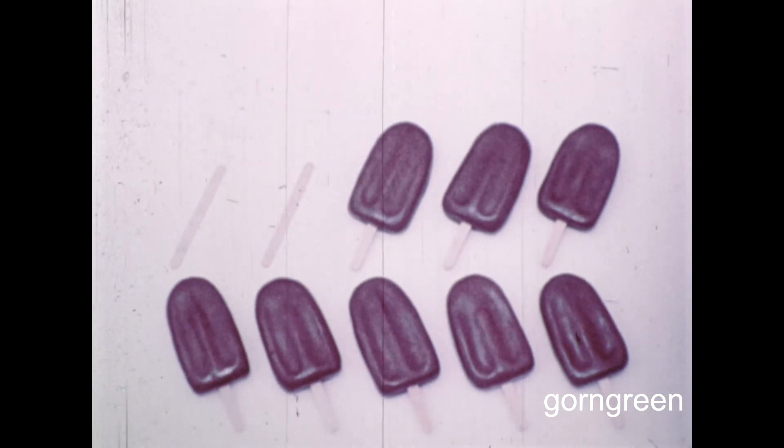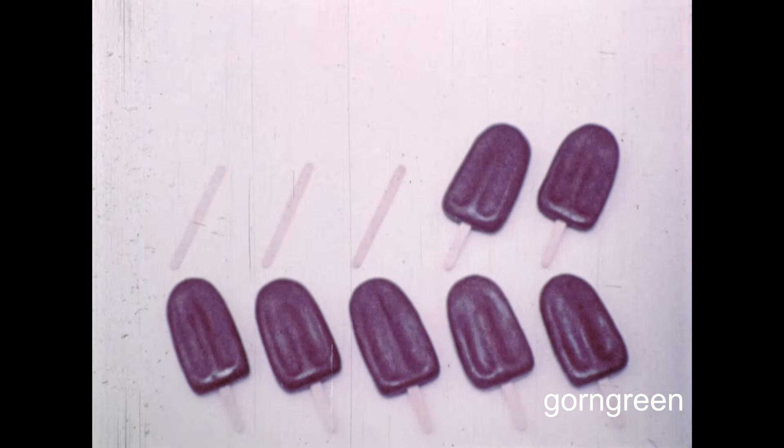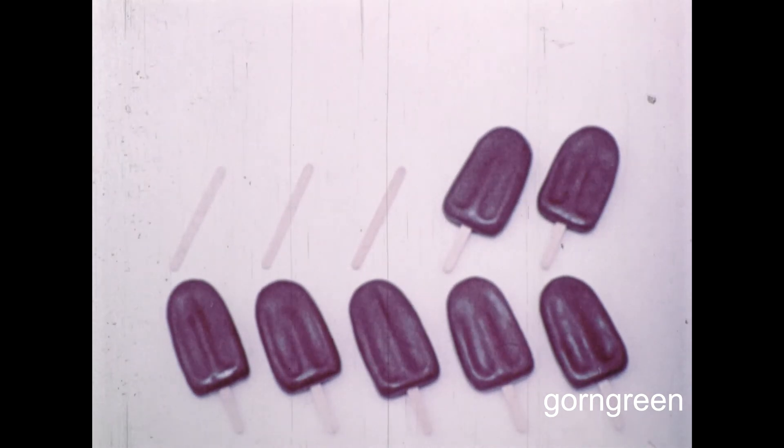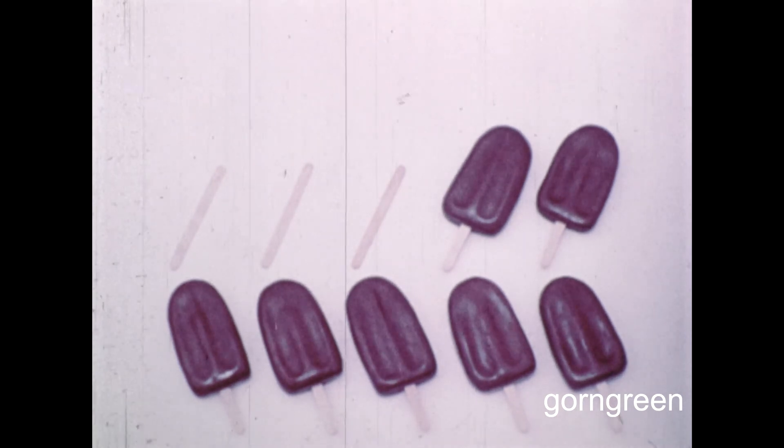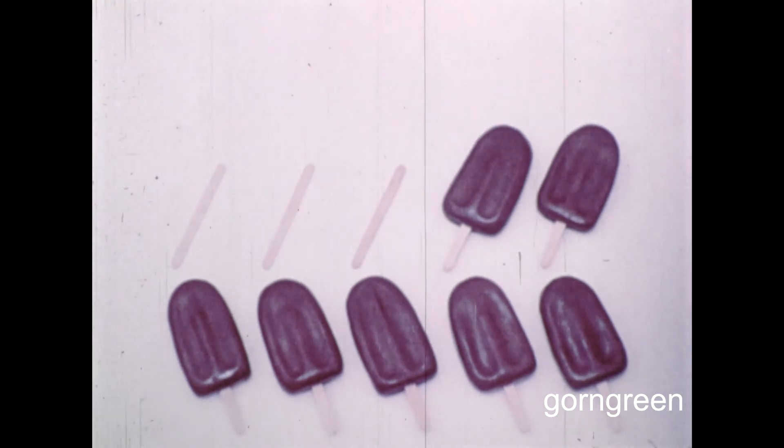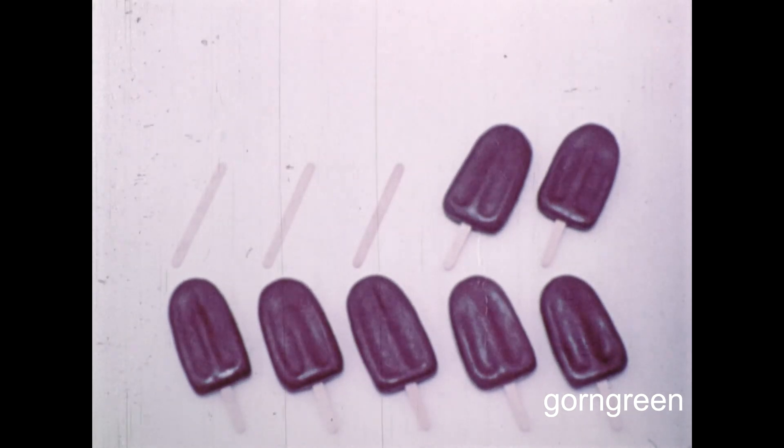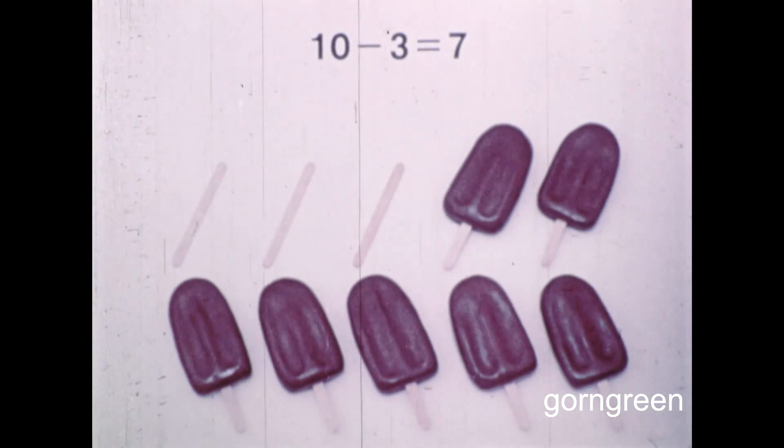Wow, we do it best. Boy, they eat best. Now, how many ice cream bars do we have left? One, two, three, four, five, six, seven. We still have seven ice cream bars. And we want to find out how many were eaten. So, how do we do it? I know. We'll count the sticks left over. There are one, two, three. Three sticks left over. So, ten minus three equals seven. Well, there you have it.